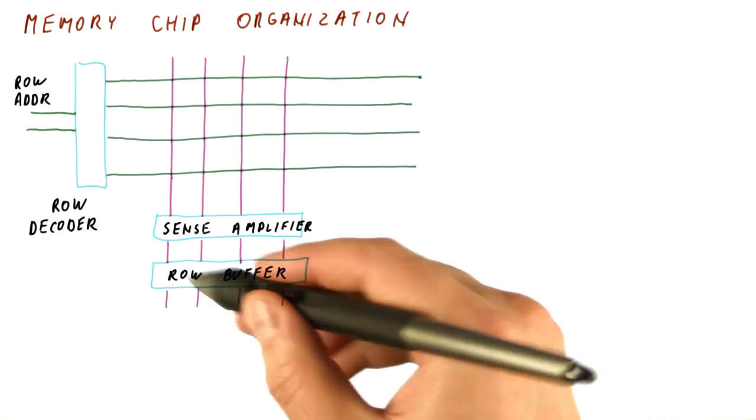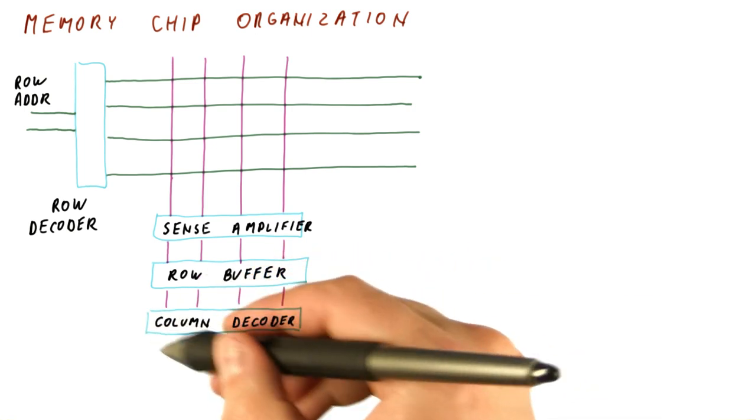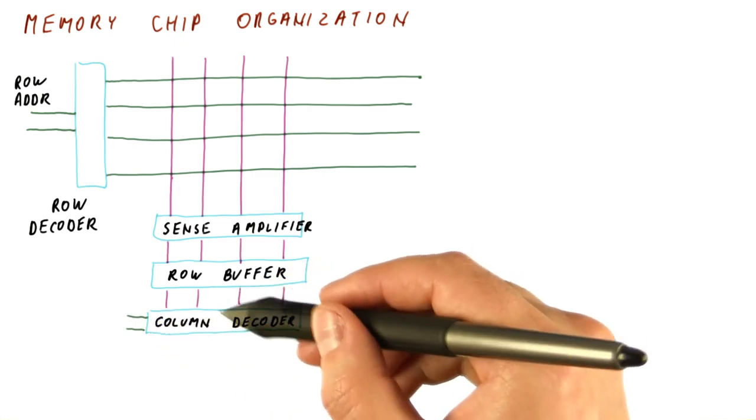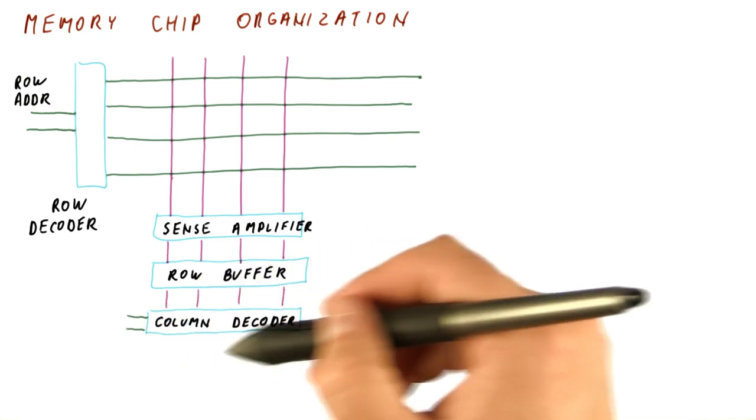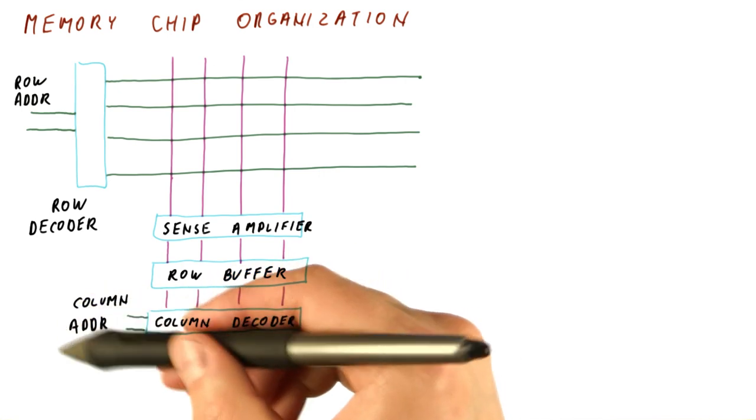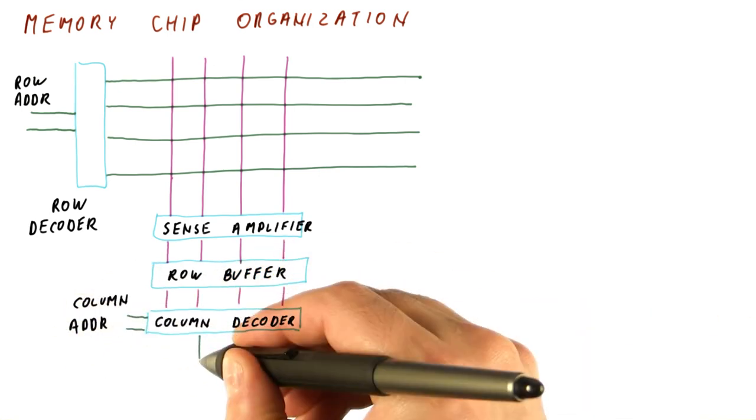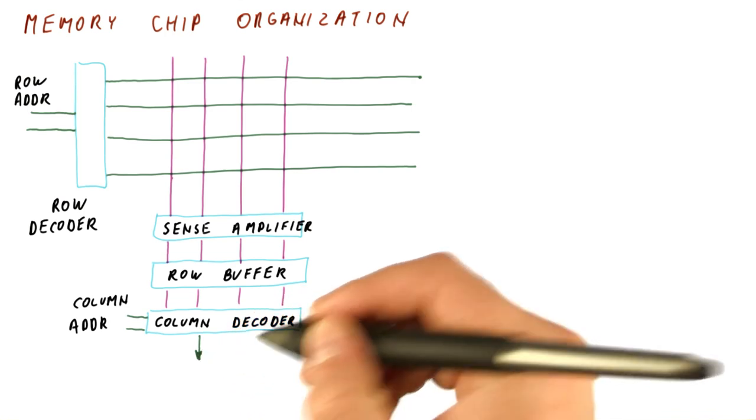The row buffer feeds the data it latched to another decoder that is called the column decoder. This decoder selects the correct bit among these four, let's say, using the column address, which is another part of the data address, and it outputs a single bit.